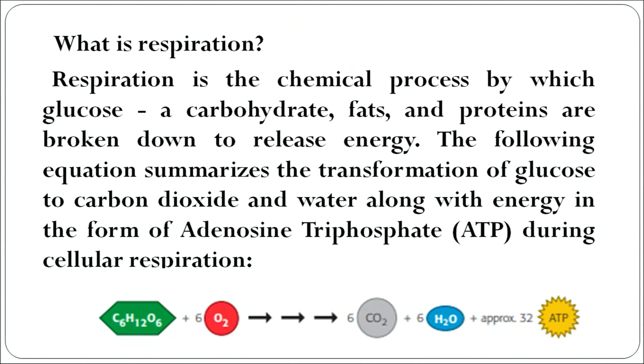The equation depicted here shows how glucose is broken down to carbon dioxide and water, and the essential part of this reaction is that it releases a lot of energy in the form of adenosine triphosphate (ATP), which is the energy molecule. This reaction is complex, taking place through several pathways, and each pathway has a series of enzymes involved in it. These enzymes are very specific to each step of respiration.